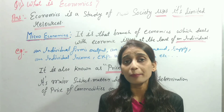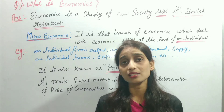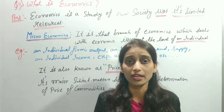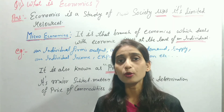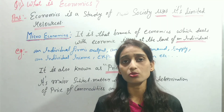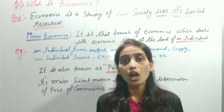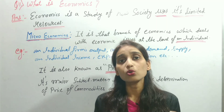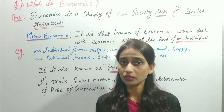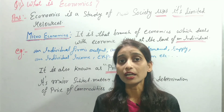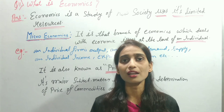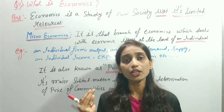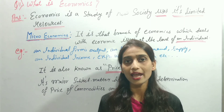The word 'economics' was used to understand how limited funds can be used to manage the household. For example, suppose Mr. X is given 30,000 rupees to run household expenses for one month. He will allocate those 30,000 rupees so properly that all his monthly work gets completed and there is no shortage of funds within that month — no work suffers due to lack of funds. This proper management is what we call economics. There are two types of economics: microeconomics and macroeconomics.